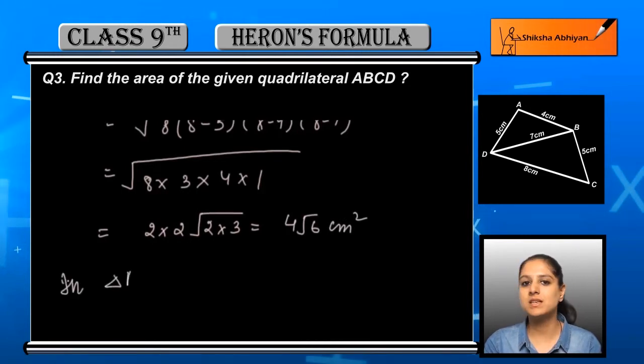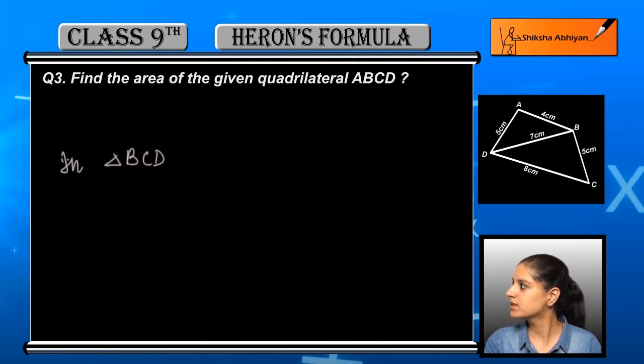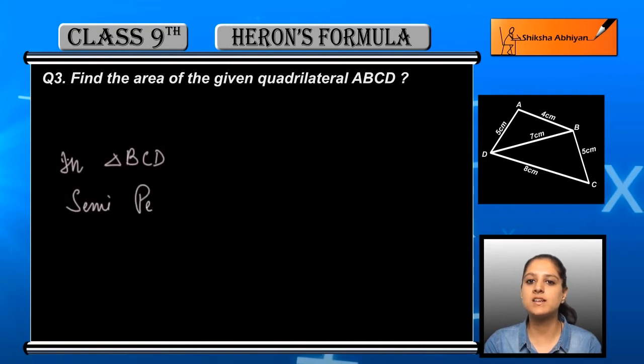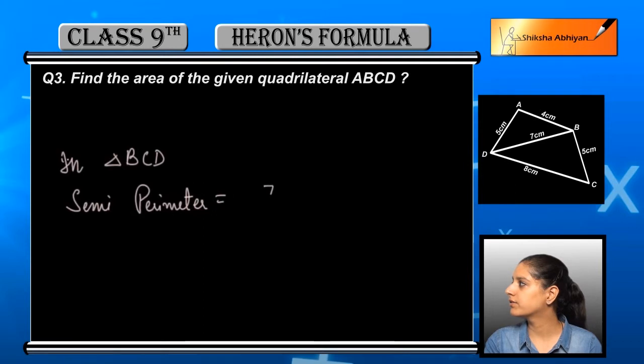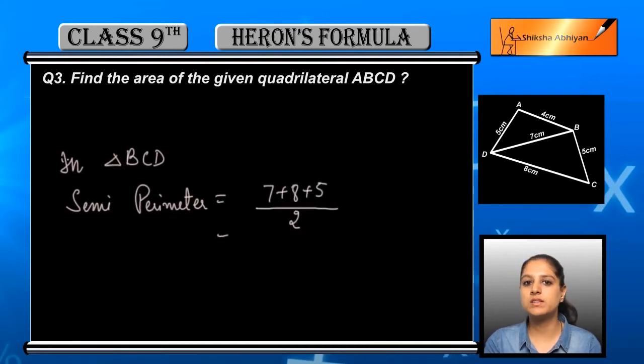Now we will find the area of the second triangle, triangle BCD, in the same way. First the semi-perimeter: the semi-perimeter is the sum of all sides divided by 2, which is equal to 7 plus 8 plus 5 divided by 2. Further solving, we get 20 by 2, that is equal to 10 centimeters.